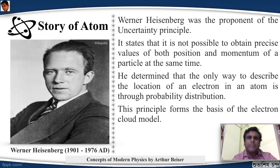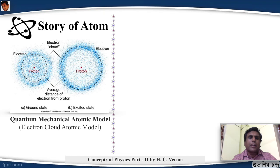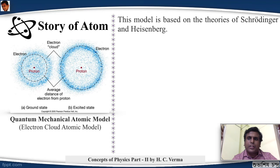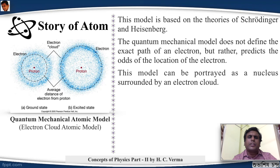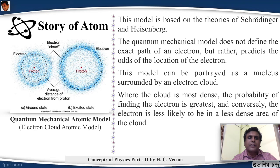This is the quantum mechanical atomic model or the electron cloud model. On the left is a ground state atom, and on the right is an excited state atom. The model is based on the theories of both Schrödinger and Heisenberg. The quantum mechanical model does not define the exact path of an electron, but rather predicts the odds of the location of the electron. This model can be portrayed as a nucleus surrounded by an electron cloud, where the cloud is most dense, the probability of finding the electron is greatest, and conversely, the electron is less likely to be in a less dense area of the cloud. That is, electron is somewhere around the proton - it is there, but we don't know where exactly it is. It is in a probability space.